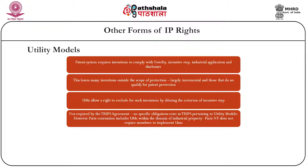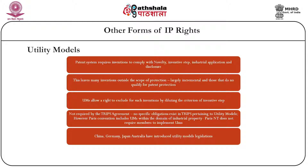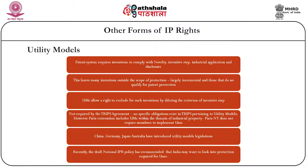Similarly, the TRIPS agreement, read mutatis mutandis along with the Paris Convention, requires that both national treatment and most-favored-nation treatment are given effect to, but there is no positive obligation to implement utility models as such. Countries which have utility models include China, Germany, Japan, and Australia, among others. There is a recent development — the draft national IPR policy of 2014 recommended that India may want to look into protection required for utility models.